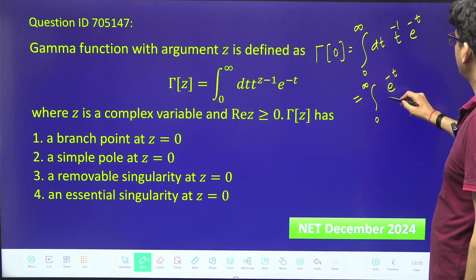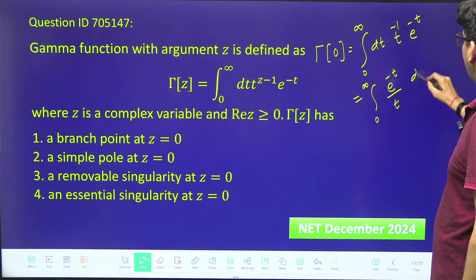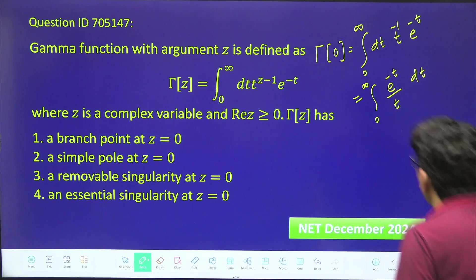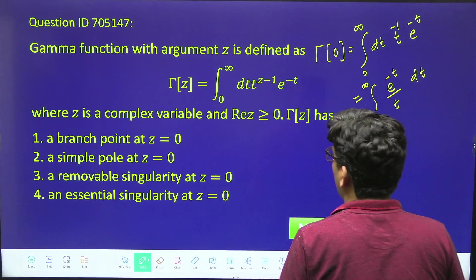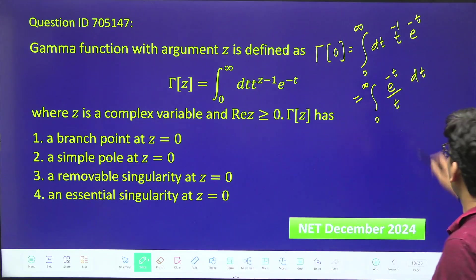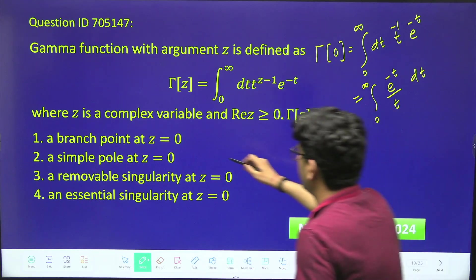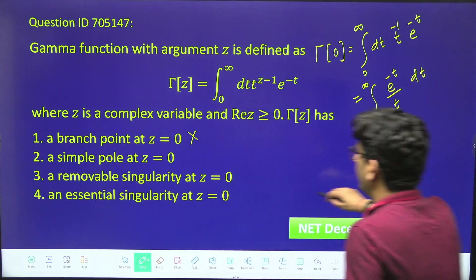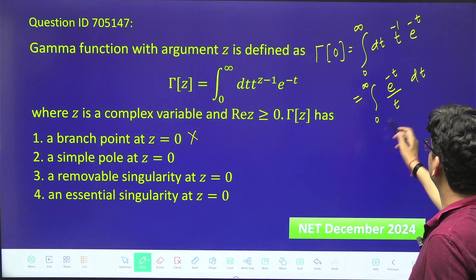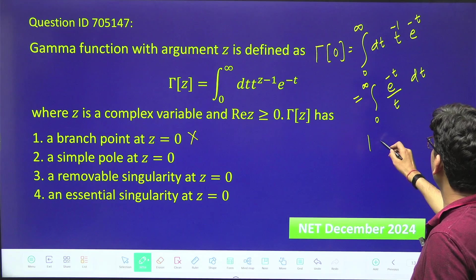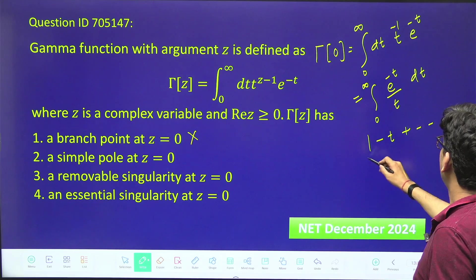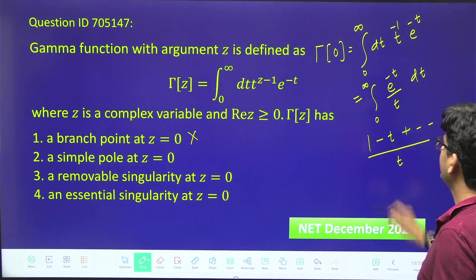Now they have asked what type of singularity we have. Is it a branch point? No, it is not a branch point. Is it a simple pole? If I write this as a power series, it will be (1 minus t plus...) divided by t. So yes, it is a simple pole at z equals 0.